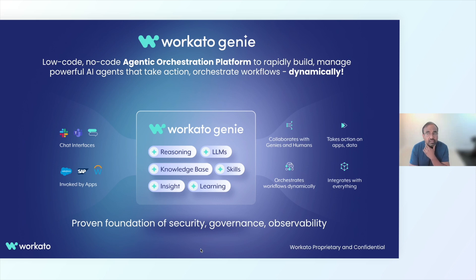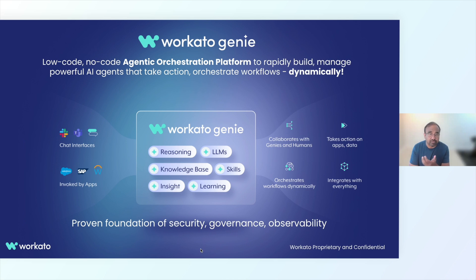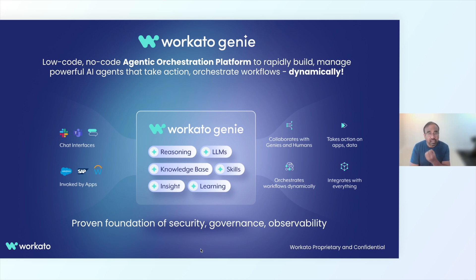The context comes from the various knowledge bases that you would have connected to it — whether it be Confluence, Microsoft SharePoint, Google Drive, it doesn't really matter. You provide that knowledge base and the AI takes a look at it in order to get that context.